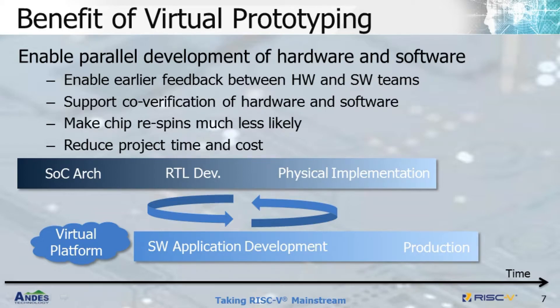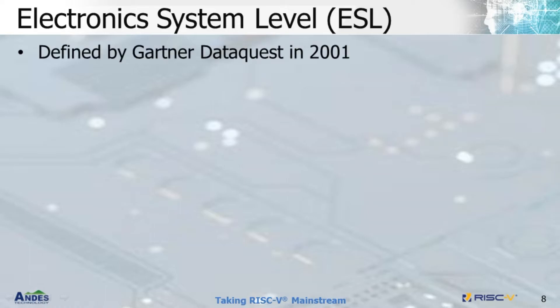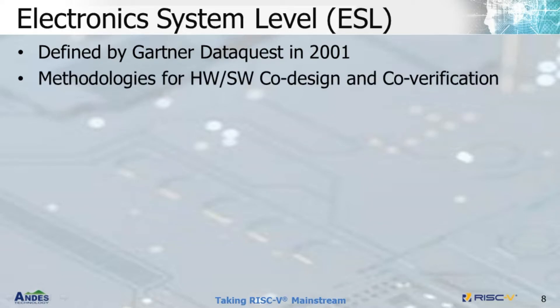In order to provide a solution for virtual prototyping, we need a method to help us achieve this goal — and that's where ESL comes in. Electronic System Level was first defined by Gartner Dataquest in 2001. It is the methodology for hardware and software co-design and co-verification to help designers easily construct or reconfigure the SOC model in different development phases without worrying about the details of hardware implementation.